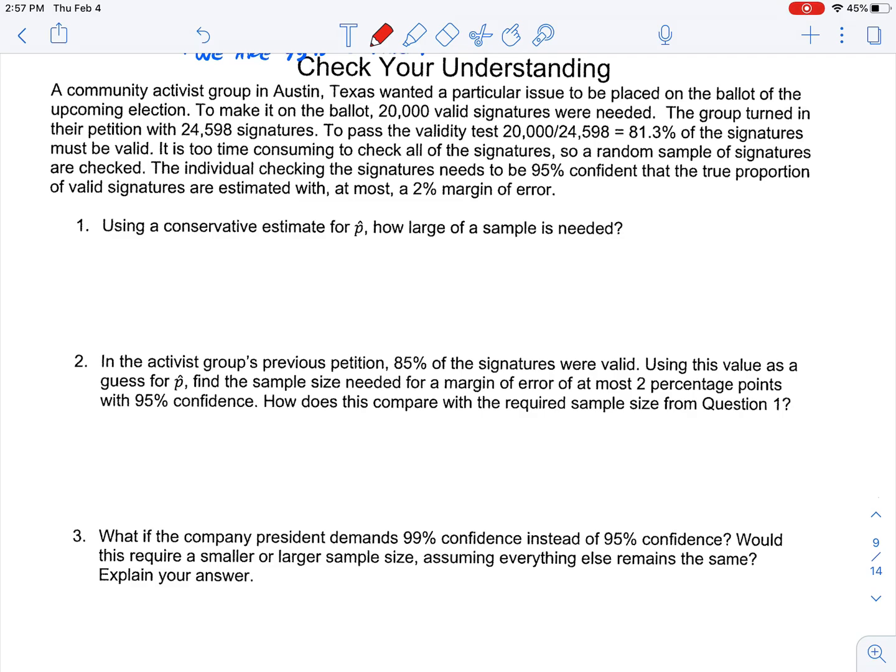Let's do an example and you'll see how this works. A community activist group in Austin, Texas wanted a particular issue to be placed on the ballot of the upcoming election. To make it on the ballot, 20,000 valid signatures were needed. The group turned in their petition with 24,598 signatures. To pass the validity test, 20,000 of 24,598, 81.3% of the signatures must be valid. It is too time consuming to check all the signatures, so a random sample of signatures are checked. The individual checking the signatures needs to be 95% confident that the true proportion of valid signatures are estimated with, at most, a 2% margin of error.